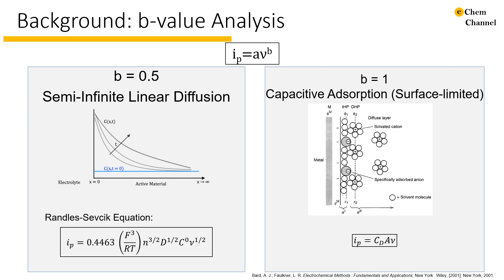In my own words, B-value analysis is a technique which may be applied to voltammetric data. You look at the relationship between peak current and scan rate, represented here. Typically, this value will vary between the extremes of 1.5 and 1, with each of those values corresponding to specific diffusion conditions.